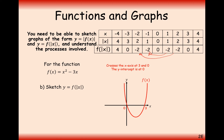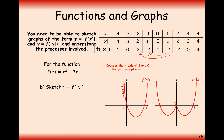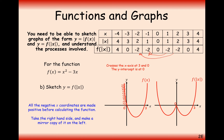Your original graph looks a certain way, but for the modulus graph the right-hand side stays the same and now gets copied over to the left-hand side. All of these left-hand x-values get made positive first and then have the same y-coordinate as the corresponding right-hand side value — it's like a mirror image from the right to the left. The original left-hand side of the graph is effectively rubbed out. So: all negative x-coordinates are made positive before calculating the function.